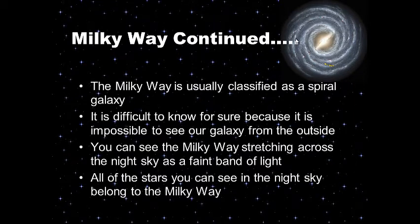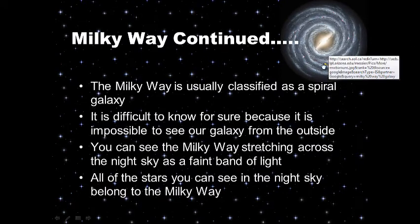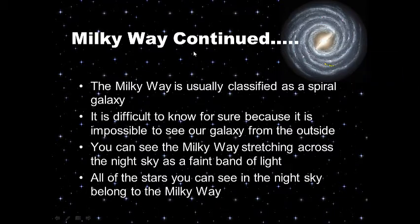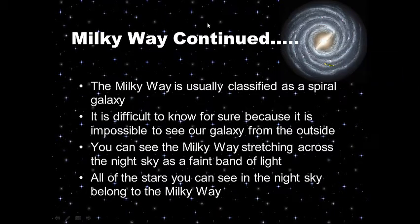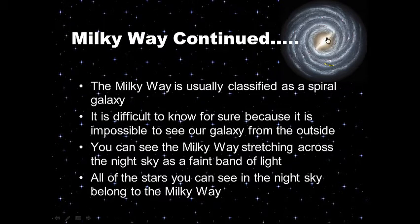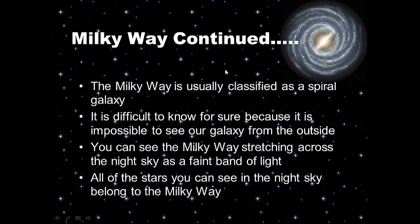We don't know exactly what it looks like because we can't escape our Milky Way galaxy and look back on it. We can't even get to Mars, so escaping our galaxy is, given our technological limitations, impossible. But we believe it's a barred spiral with a bar in the middle, based on the evidence we can gather.